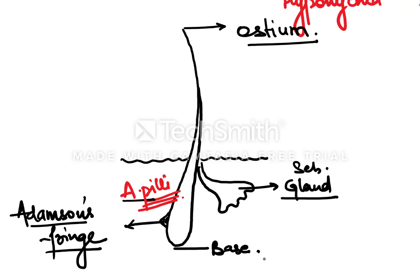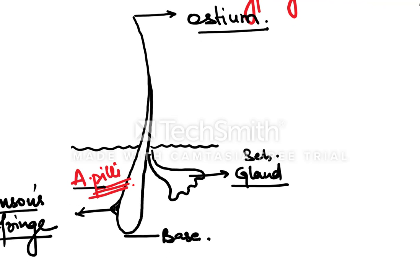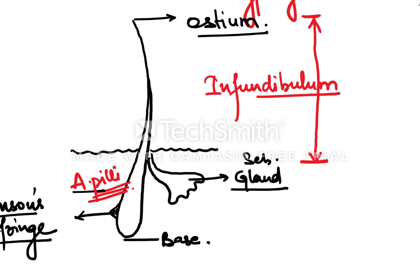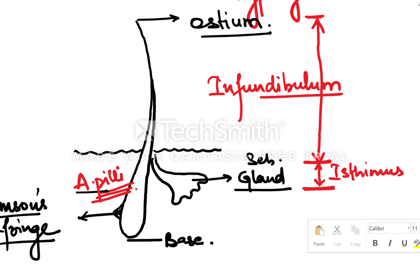Depending on these structures, you can divide the hair follicle into four components. The first component, between the osteum tip and the opening of the sebaceous gland, is known as the infundibulum. The second component, the small portion between the opening of the sebaceous gland and the attachment of the erector pili muscle, is the isthmus.